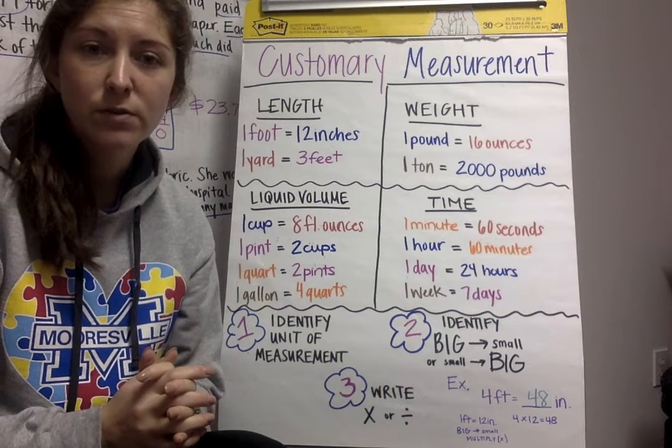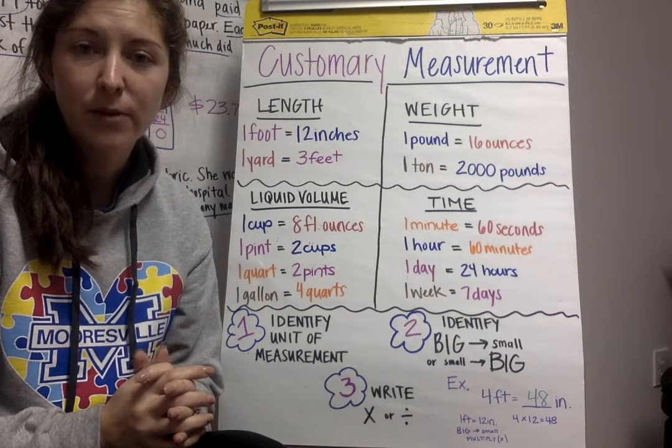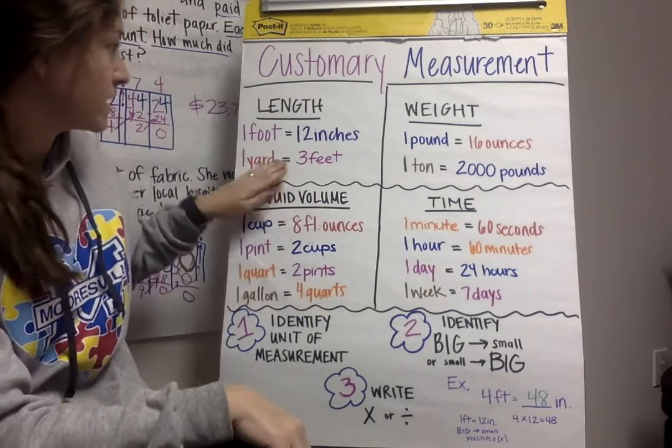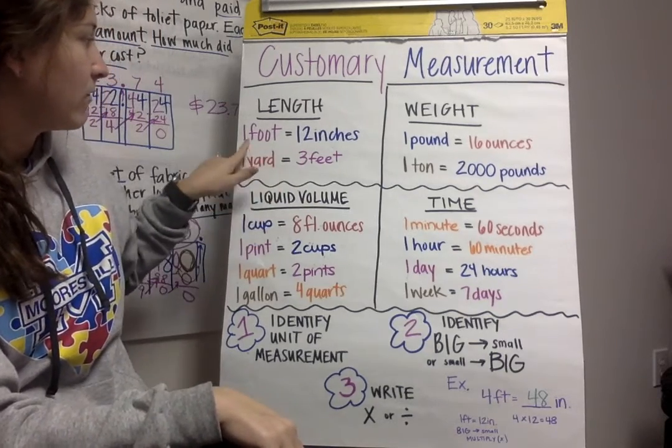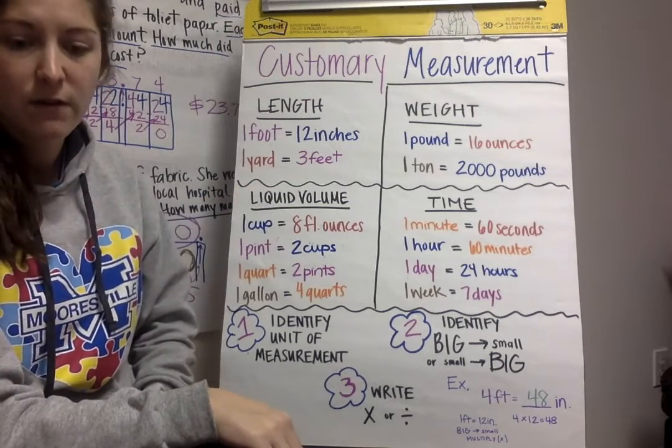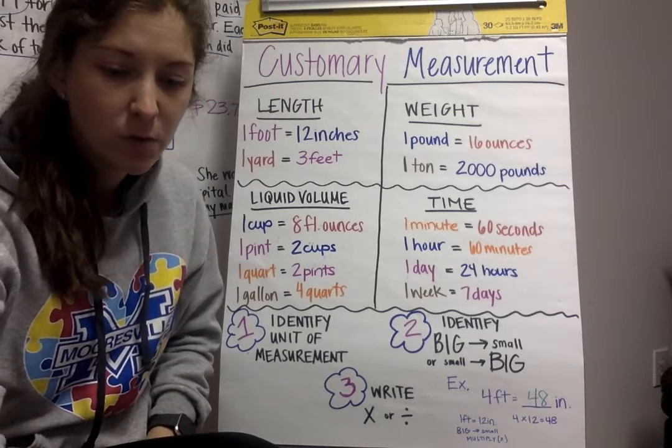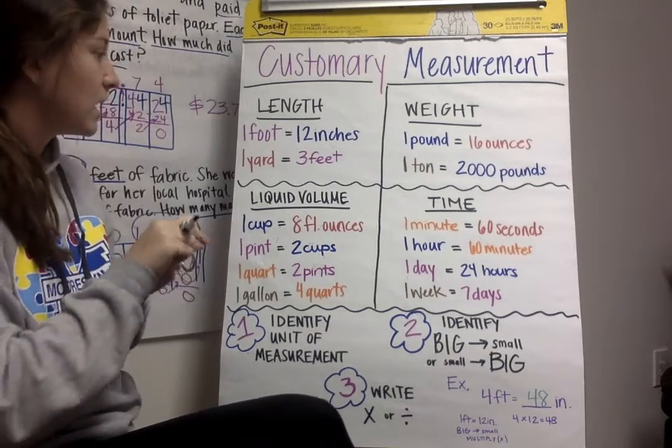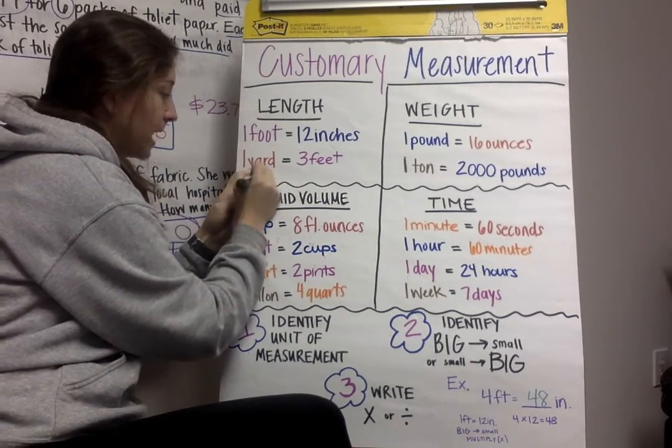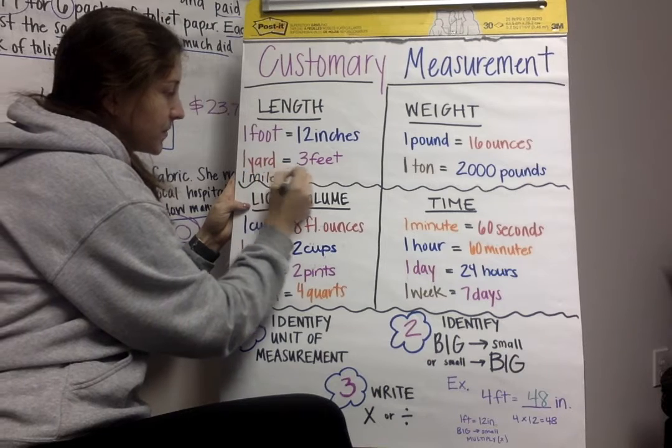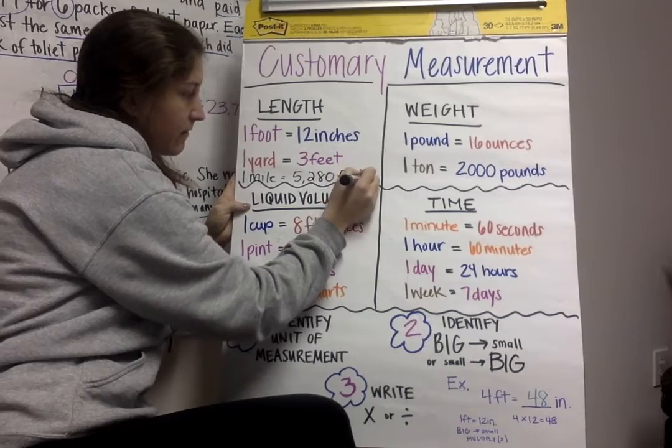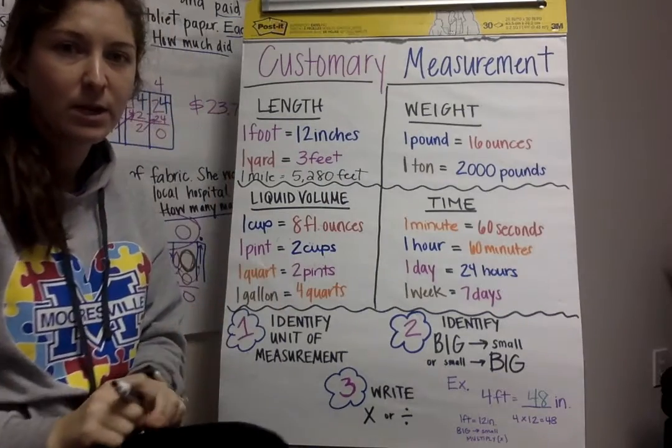Today we're just going to review those and begin to learn a little bit more about them and making those conversions. So the first place that we're going to start is up at the top with length. We have one foot equals 12 inches, one yard equals three feet, and I'm going to add one more to that. There is, in one mile, there's 5,280 feet.